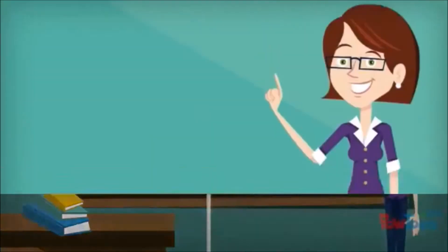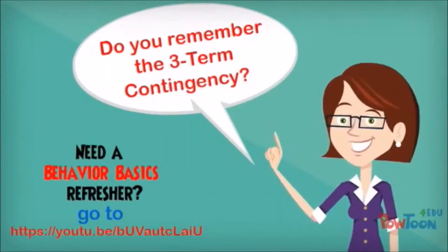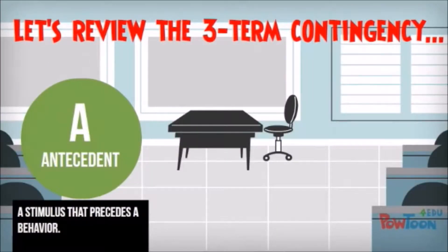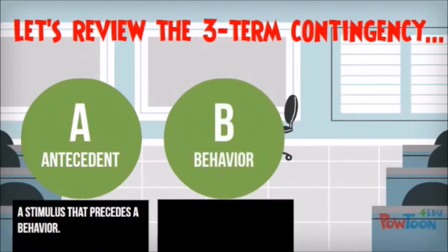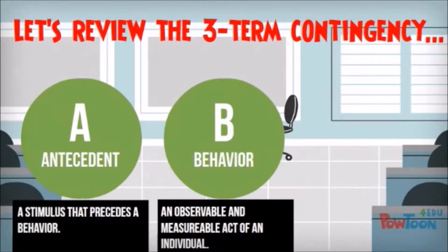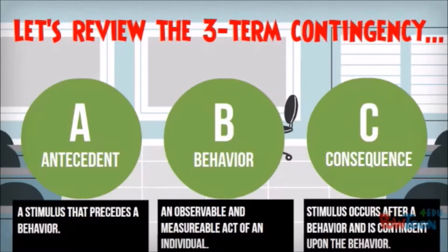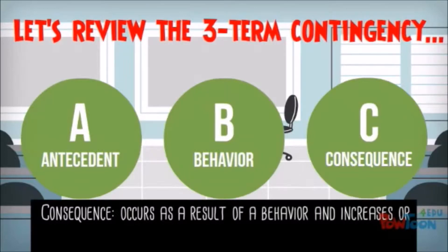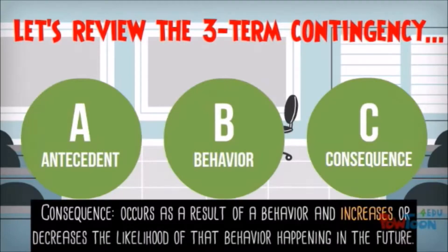Let's start with a quick review. I'm hoping you remember the three-term contingency from our behavior basics module. An antecedent is a stimulus that precedes a behavior — sometimes we say that the antecedent triggers a behavior. A behavior is an observable and measurable act; it must be seen and we must be able to describe what it looks like. Being disrespectful is not a behavior. Being out of seat is a behavior. A consequence is any stimulus presented contingently on a particular behavior. The consequence happens as a result of the behavior and will increase or decrease the likelihood of that behavior in the future.